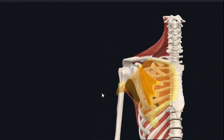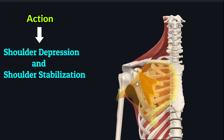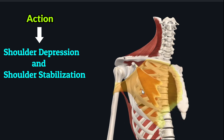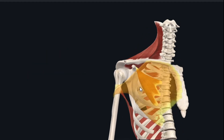The pectoralis minor muscle produces shoulder depression — it depresses the shoulder joint by acting on the coracoid process of the scapula. As the muscle contracts, it draws the scapula downward, producing shoulder depression. In this way, the pectoralis minor muscle stabilizes the shoulder girdle.